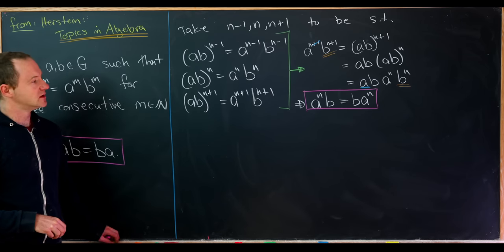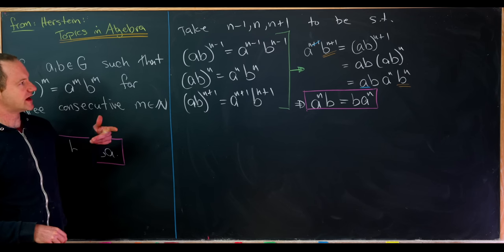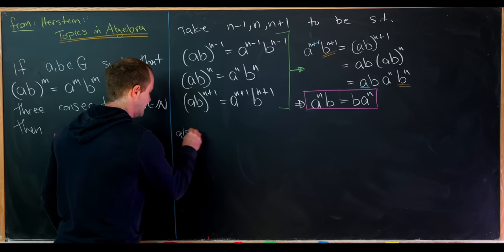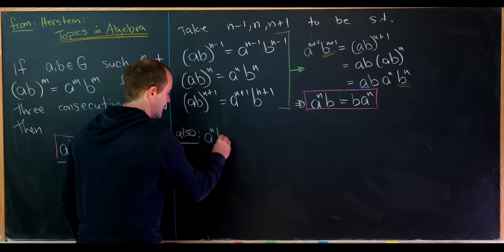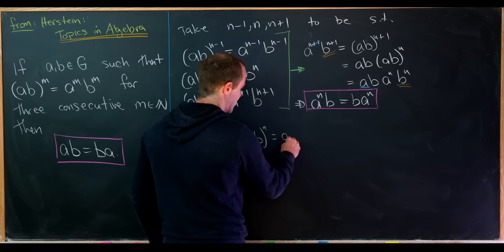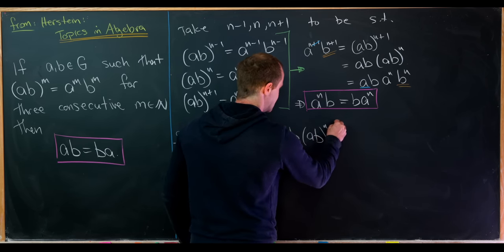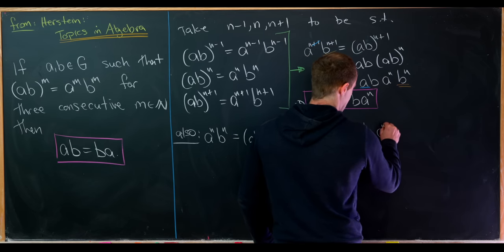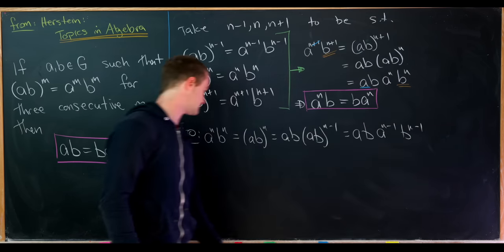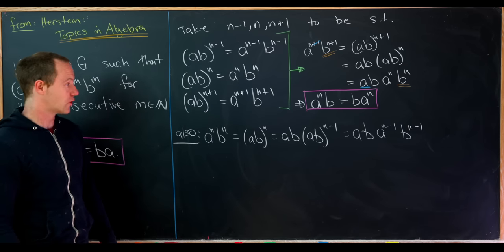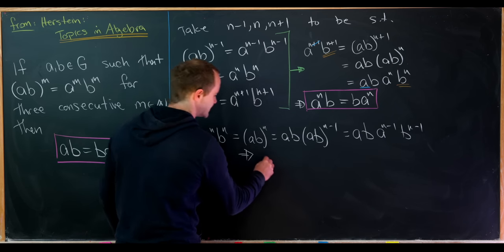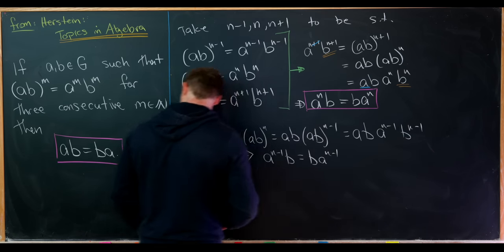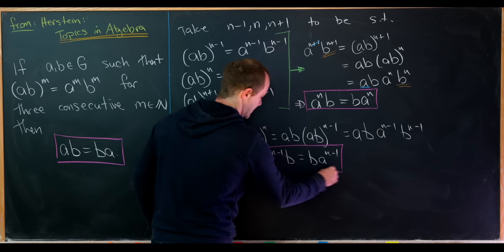Now let's do something similar using the first and second equations. We have a^n b^n equals (ab)^n, which equals ab times (ab)^(n-1). Applying the first relation, that becomes ab times a^(n-1) b^(n-1). Canceling as appropriate gives us the second relation: a^(n-1) times b equals b times a^(n-1).